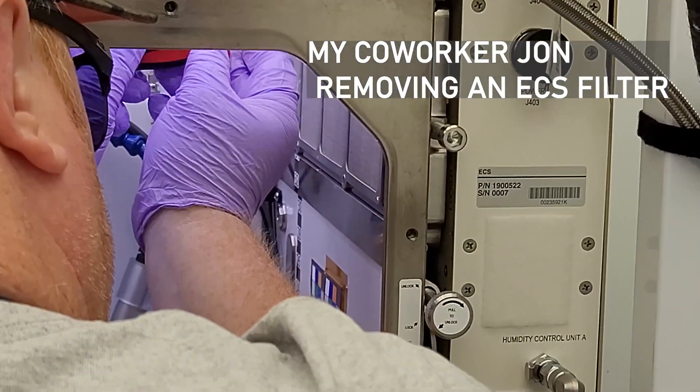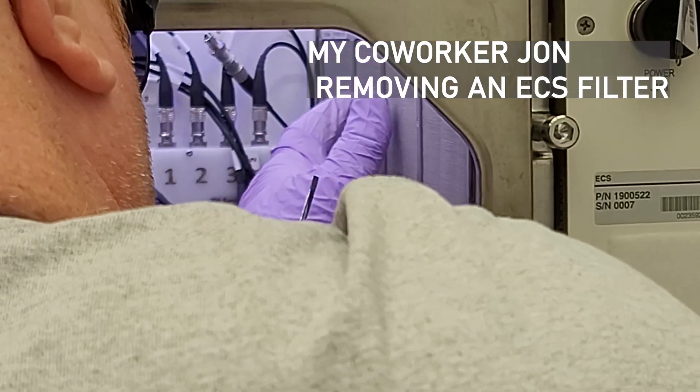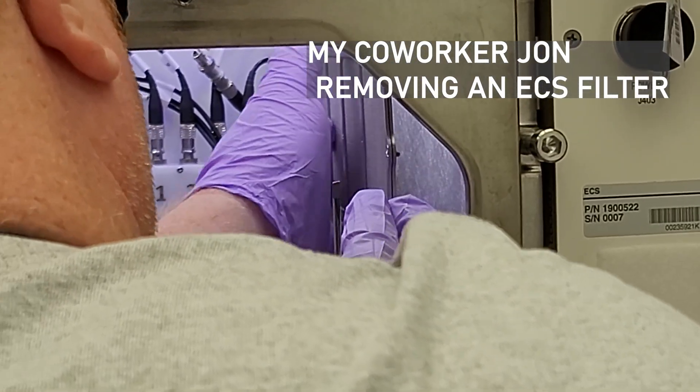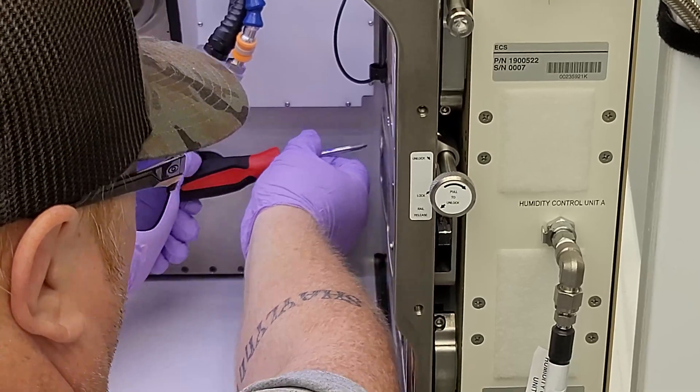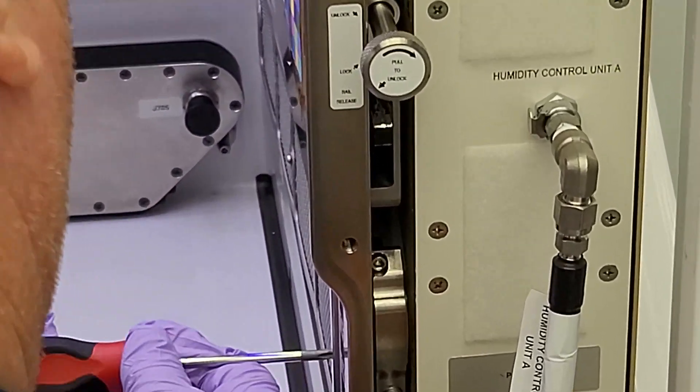The growth chamber is surrounded by a few different parts that allow it to maintain those conditions. One of them is an ECS unit which is an environmental control system and there's one on each side, and again like I said they're redundant.